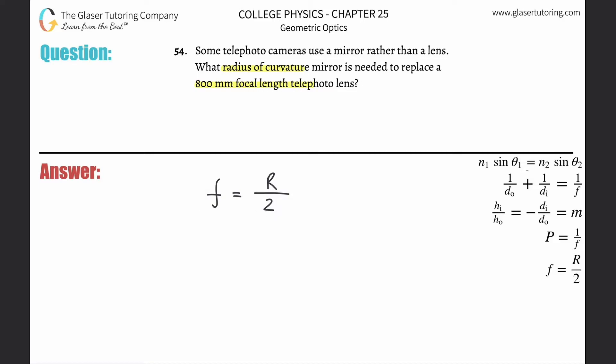If we want to find the radius of curvature, cross multiply the two over. In other words, the radius of curvature R is equal to two multiplied by the focal length.